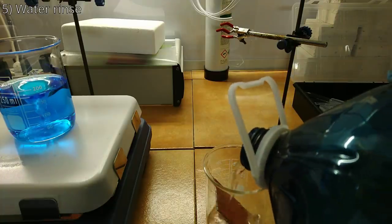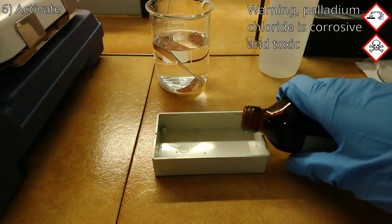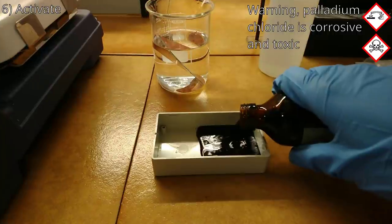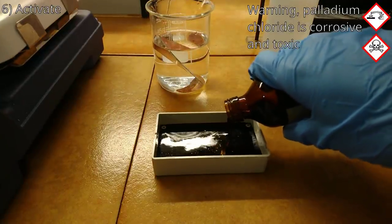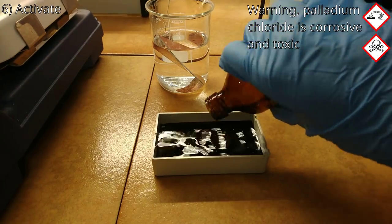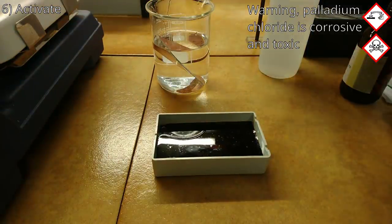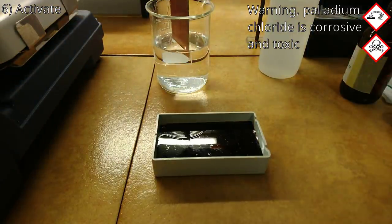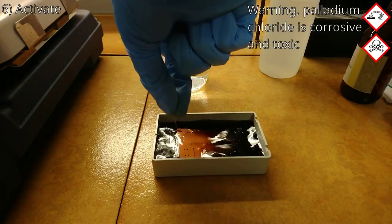The next step is again a water rinse. Step 6 is the electroless activation of the PCB surface. It is done by dipping the PCB in an acidic palladium chloride solution. Since palladium is expensive, I'm using the smallest container I could find that can fit the PCB. This step requires the PCB to remain in the activation bath with occasional agitation for around 5 minutes at ambient temperature.